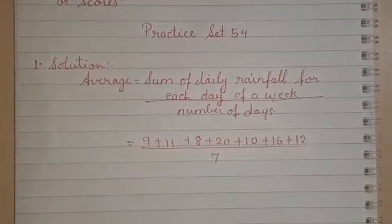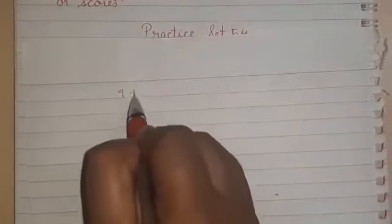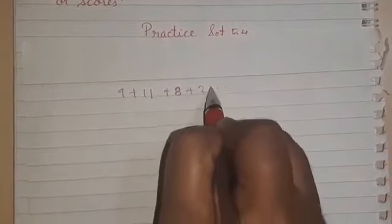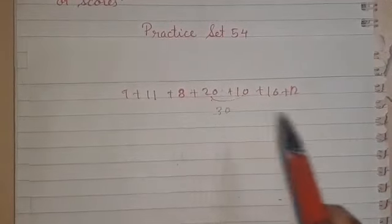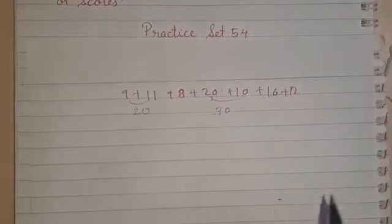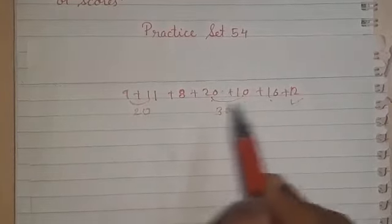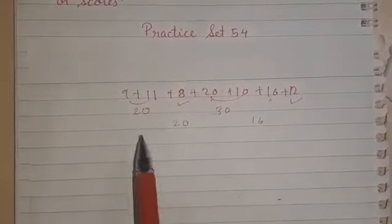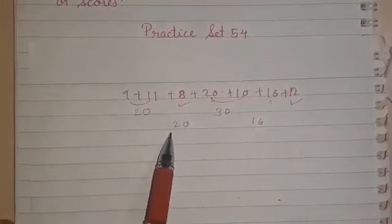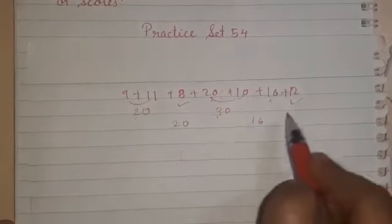Now we will add all these numbers. I have taken a rough page and written the numbers. Let's add them: 20 plus 10 is 30, 9 plus 11 is 20, and 12 plus 8 is again 20. So we have 20, 20, and 30, and the remaining number is 16. So 20 plus 20 is 40, 40 plus 30 is 70, and 70 plus 16 is 86. The addition's answer is 86.